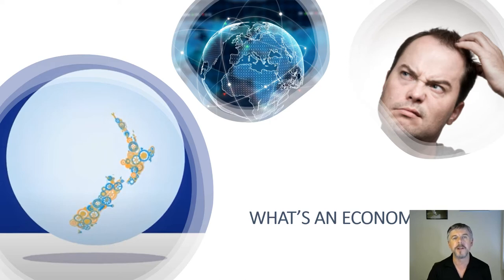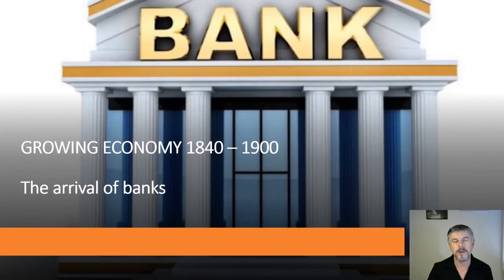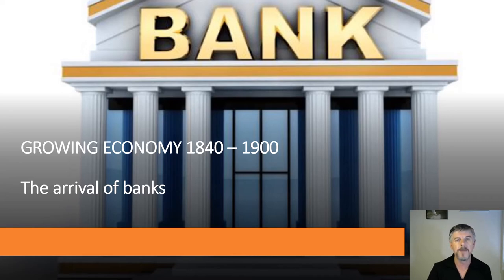Possibly the biggest difference between a country that did not have a central source of sovereignty and one that did was the lack of infrastructure in the tribal environment, caused mostly by the lack of political will to act collectively. Looking back at New Zealand from 1840 to 1900, there was a growing economy. The first bank was the Union Bank of Australia, followed by others, but there was no central authority to regulate the currency — all banks operated independently and issued their own currency.